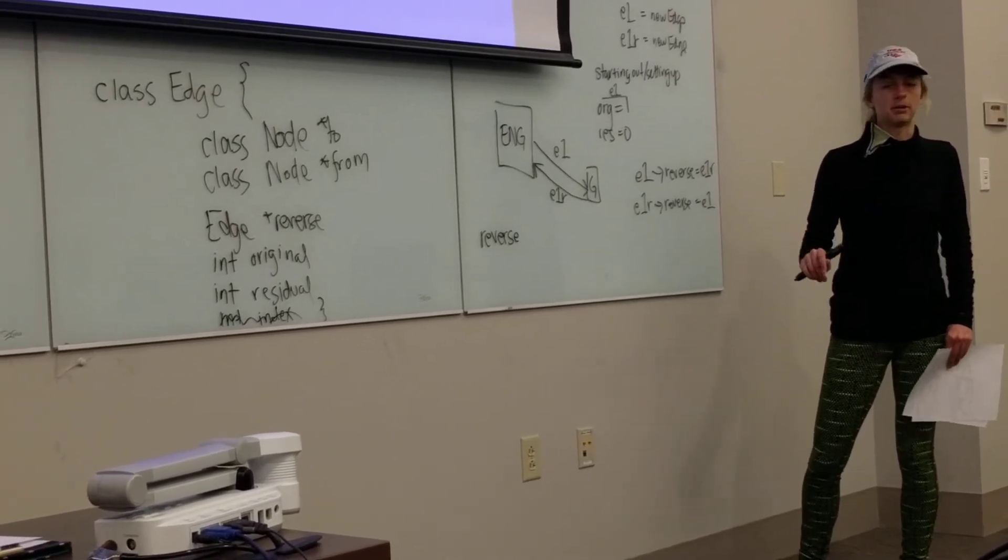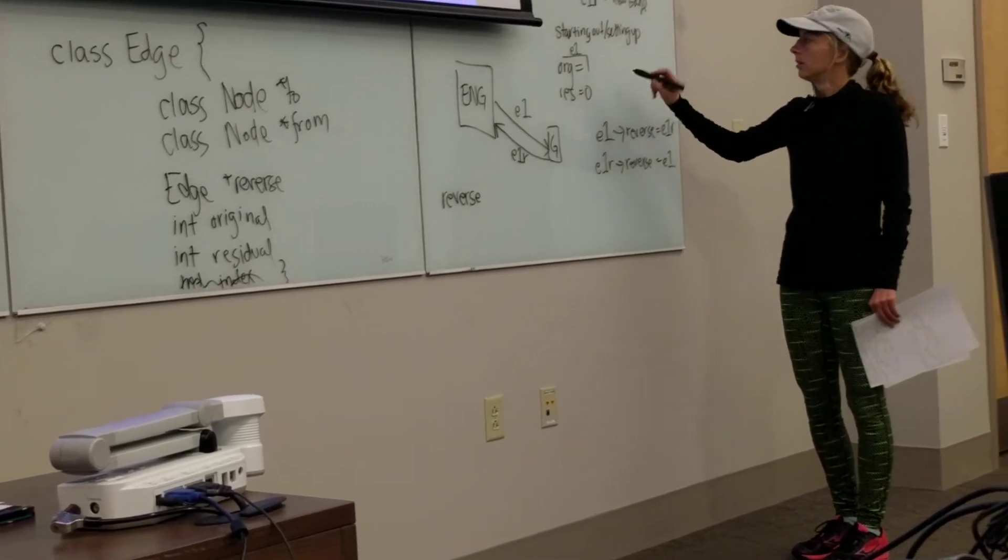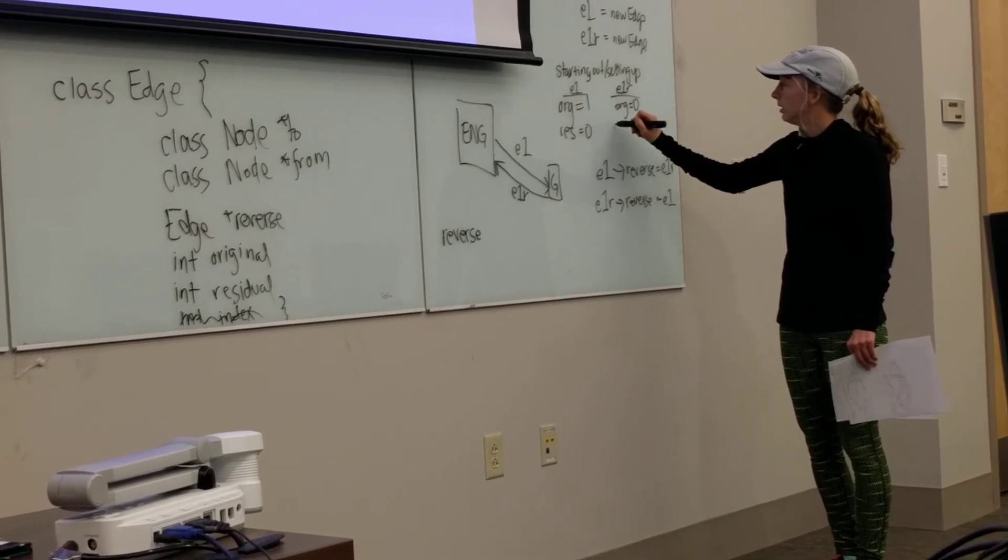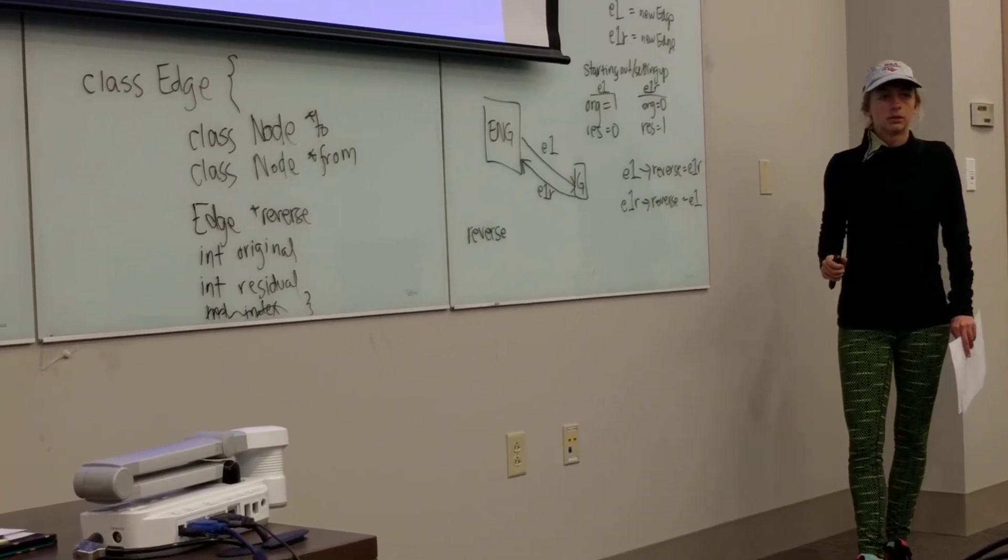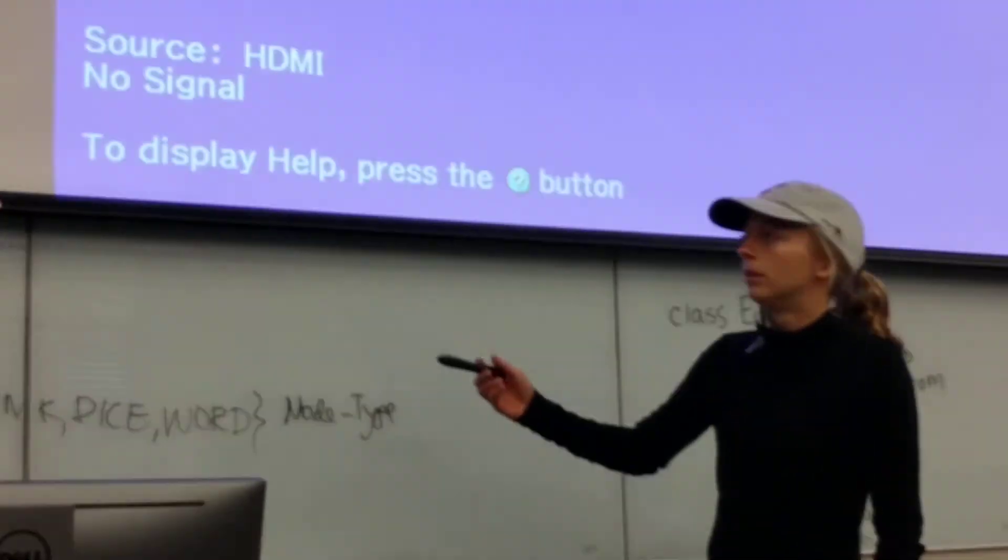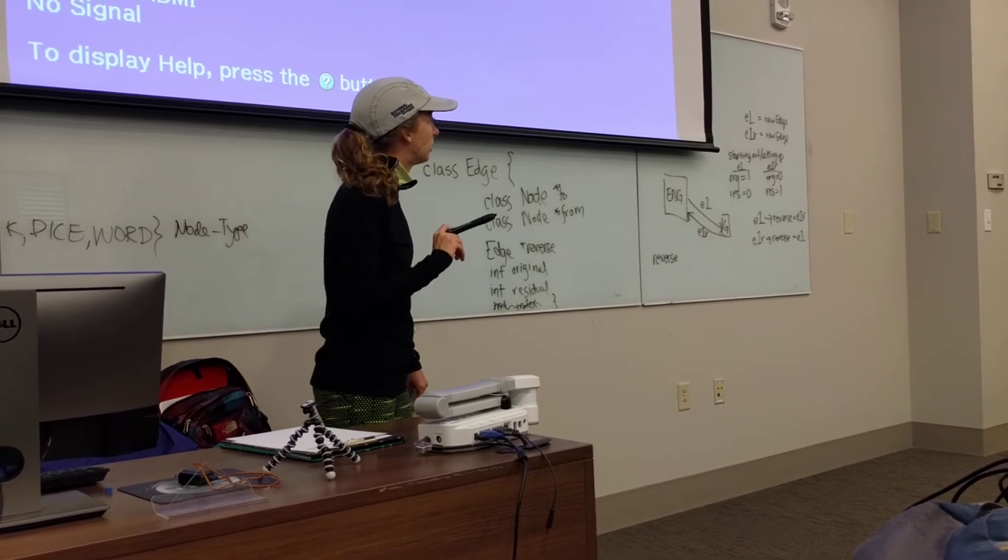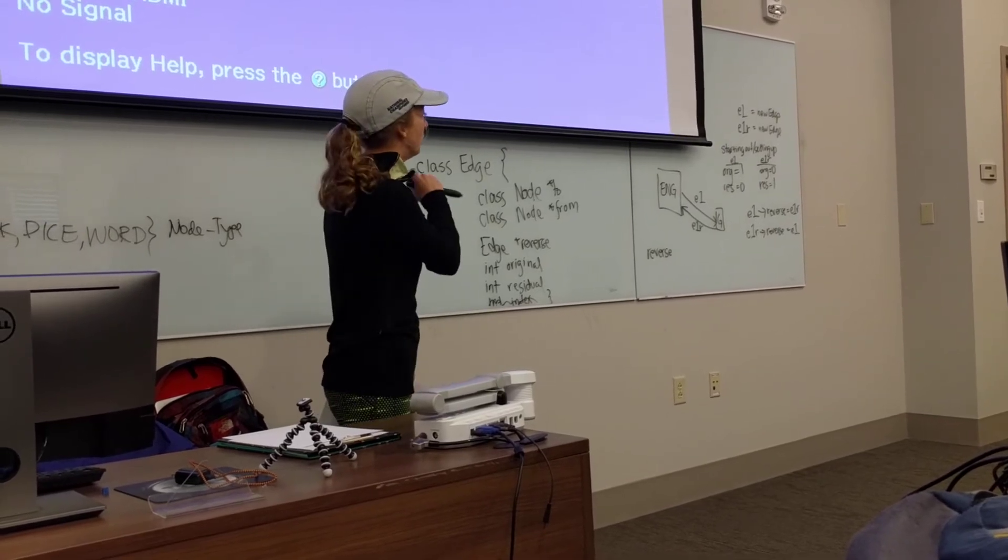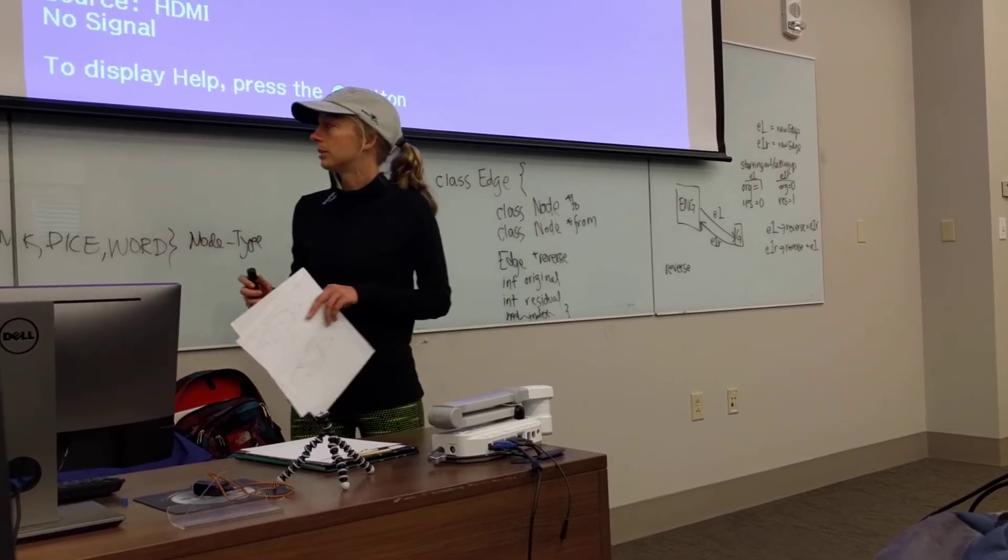The back edge is completely different. So again, starting out and setting up, E1's going to have an original of 1 and a residual of 0. E1R is going to be the opposite. Original of 0, residual of 1. So I'm going to go through and set up my entire graph this way using those starting values. For the E1's, that's any edge that's going forward in the graph. Going from the source to the dice nodes or from the dice nodes to the word nodes or from the word nodes to the sink.